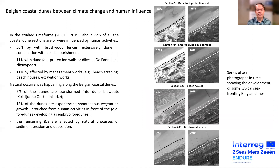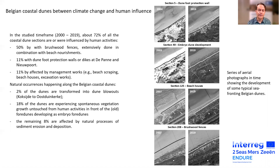In the study time frame — 20 years between 2000 and 2019 — about 72% of the coastal dunes were influenced by human activities. First of all, half of them have brushwood fences, done extensively in combination with beach nourishment: the beach was nourished and then brushwood fences were built especially in the foredunes to stabilize and entrap sand blown by the wind. Then we have 11% with dune foot protection walls or dikes near De Panne and Newport close to the French border, and another 11% affected by various management works such as beach scraping, beach houses, and excavation works.